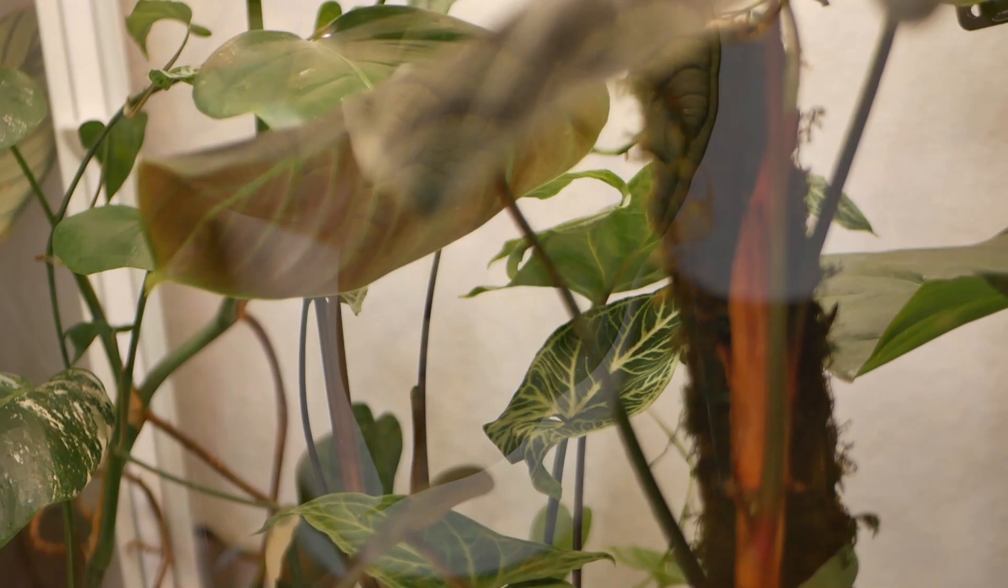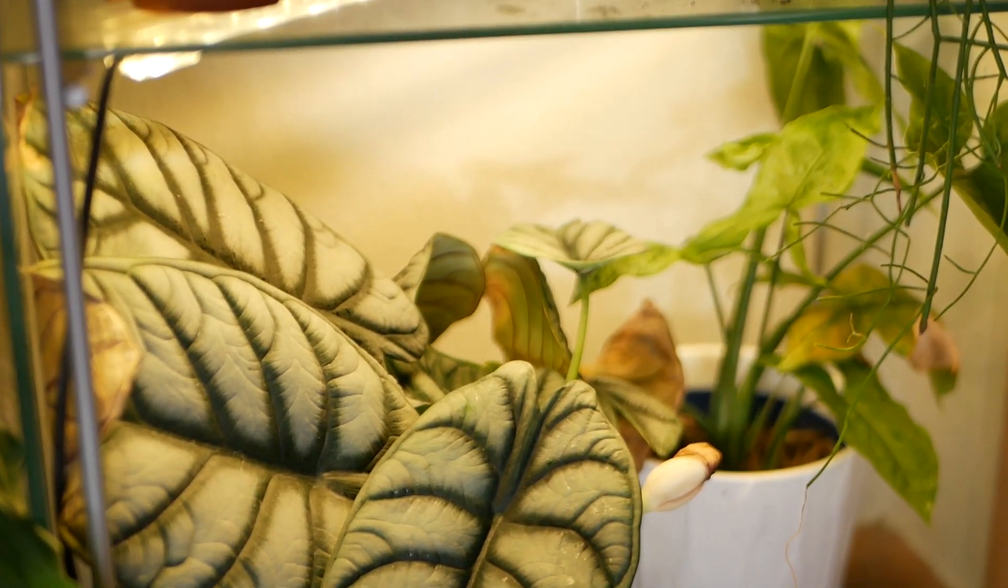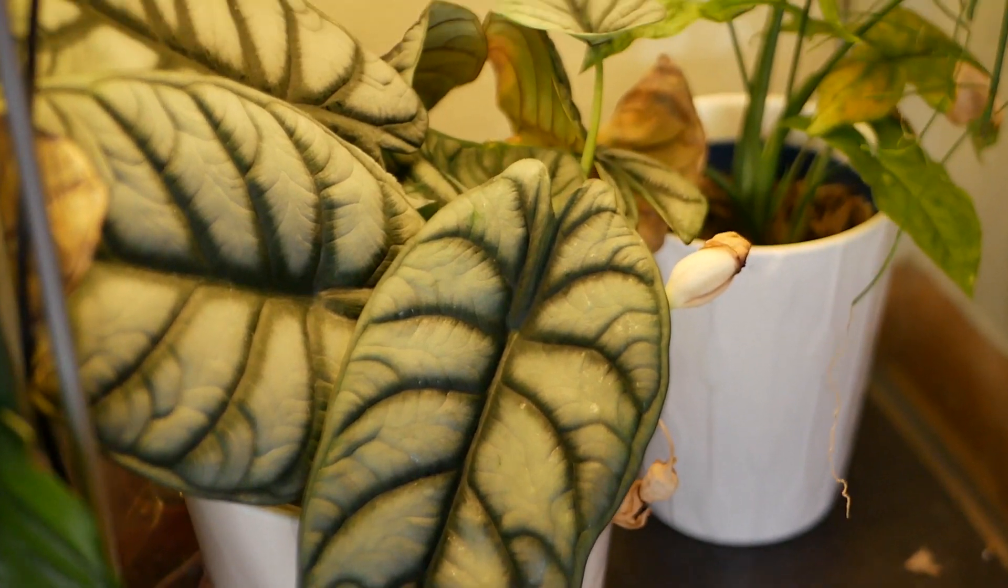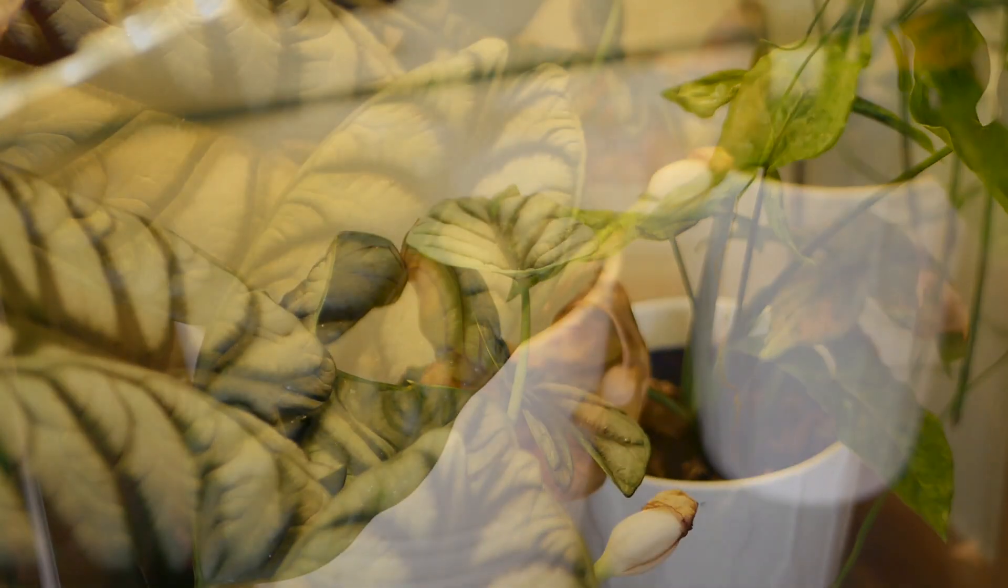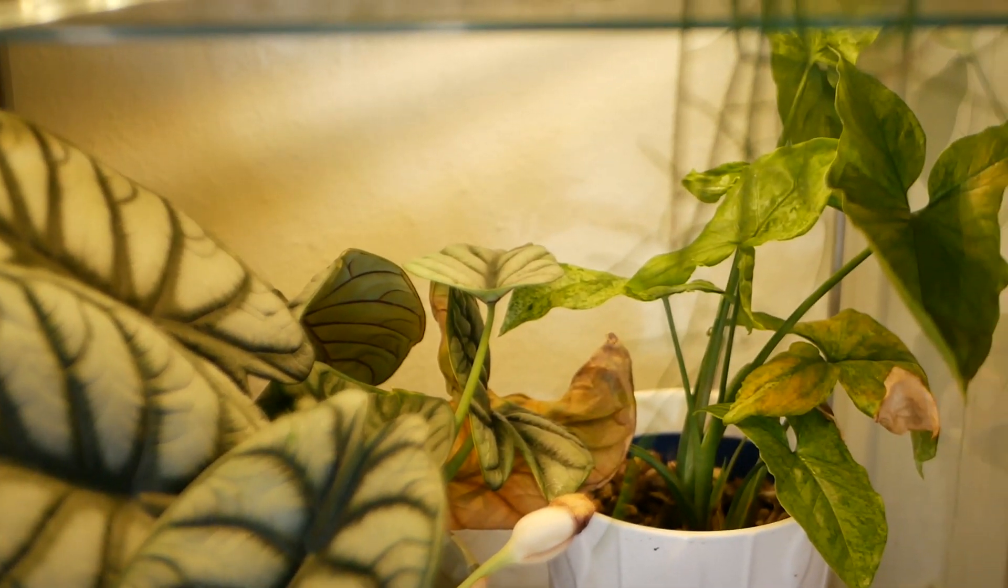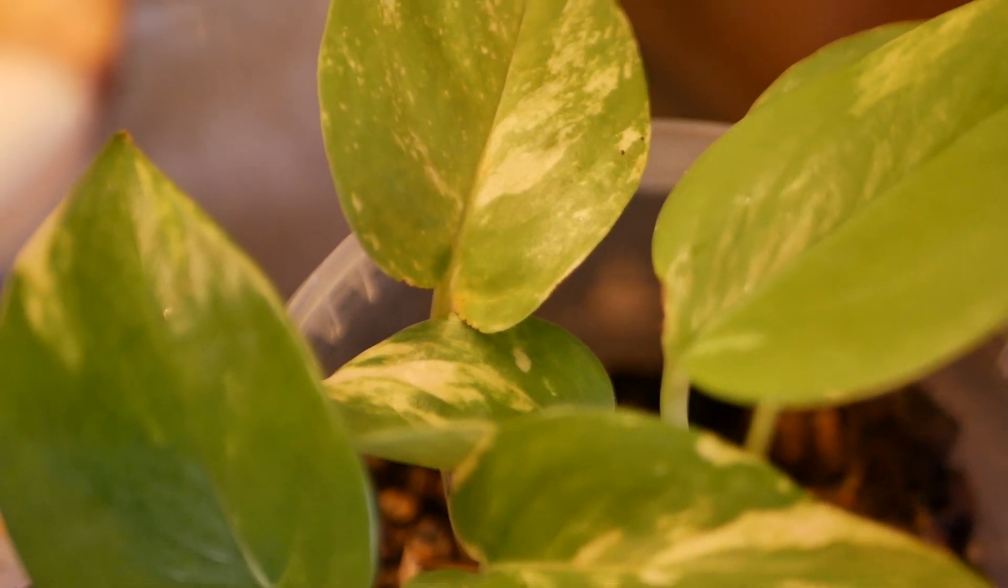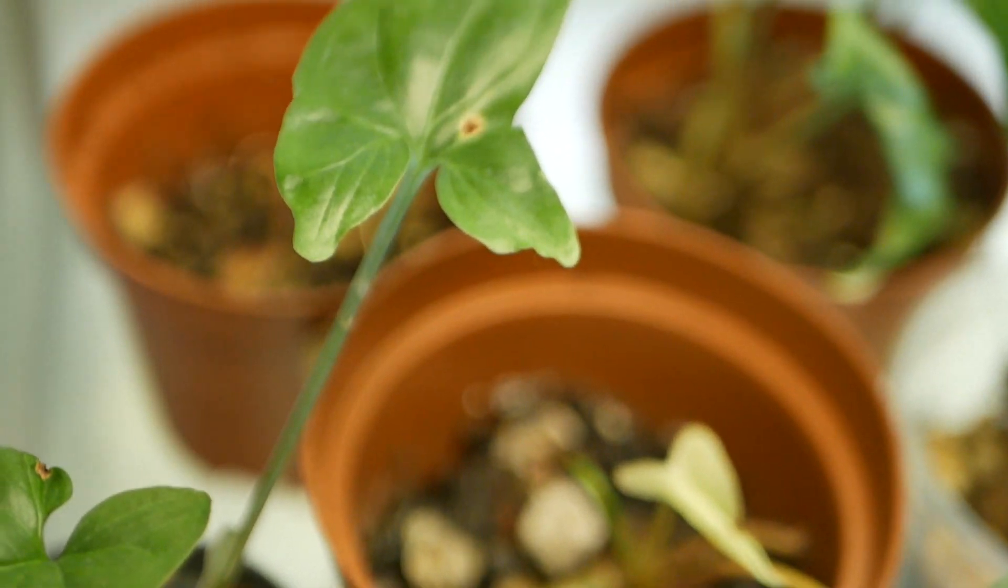The next stop is my quarantine slash rehab greenhouse cabinet. Here you can see an alocasia silver dragon and a syngonium mottled, a golden pothos and a bunch of elbow syngonium propagations.